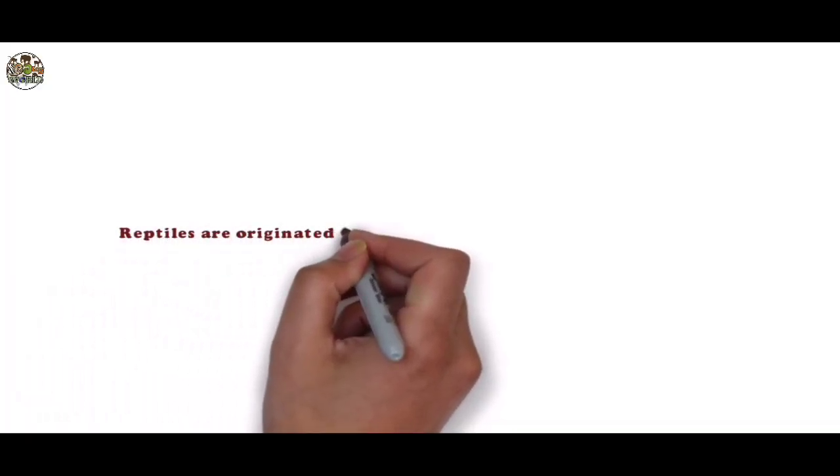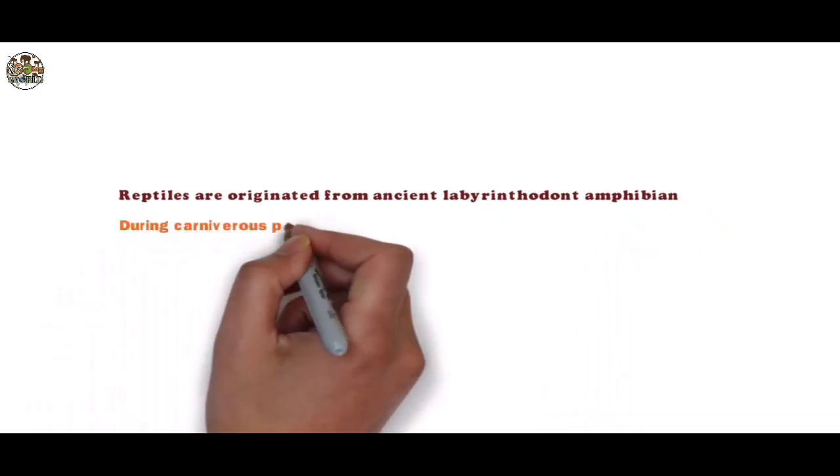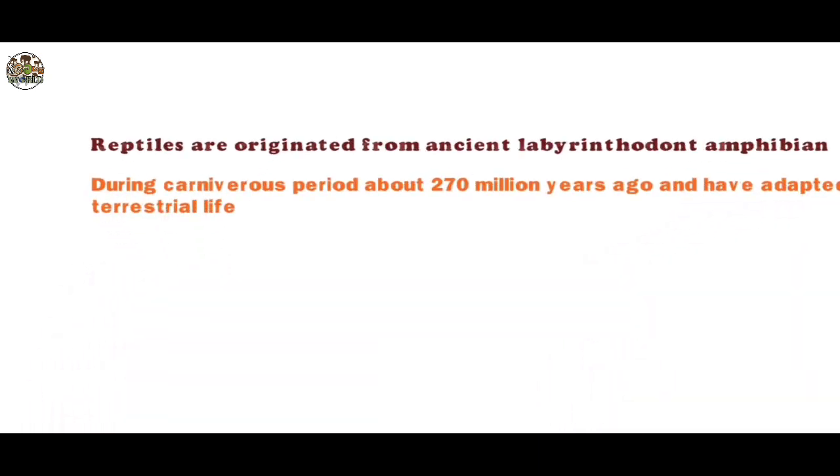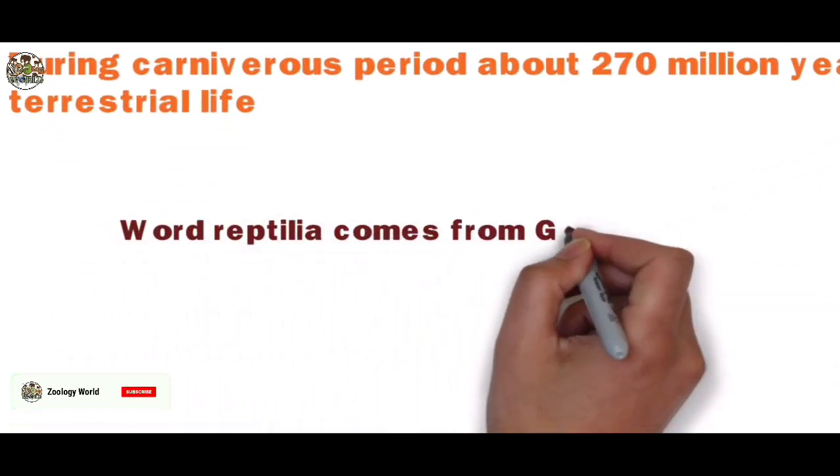Reptiles originated from ancient Leviathodont amphibians during the Carboniferous period, about 270 million years ago, and have adapted to terrestrial life. The word Reptilia comes from the Greek word Repier, which means creep.